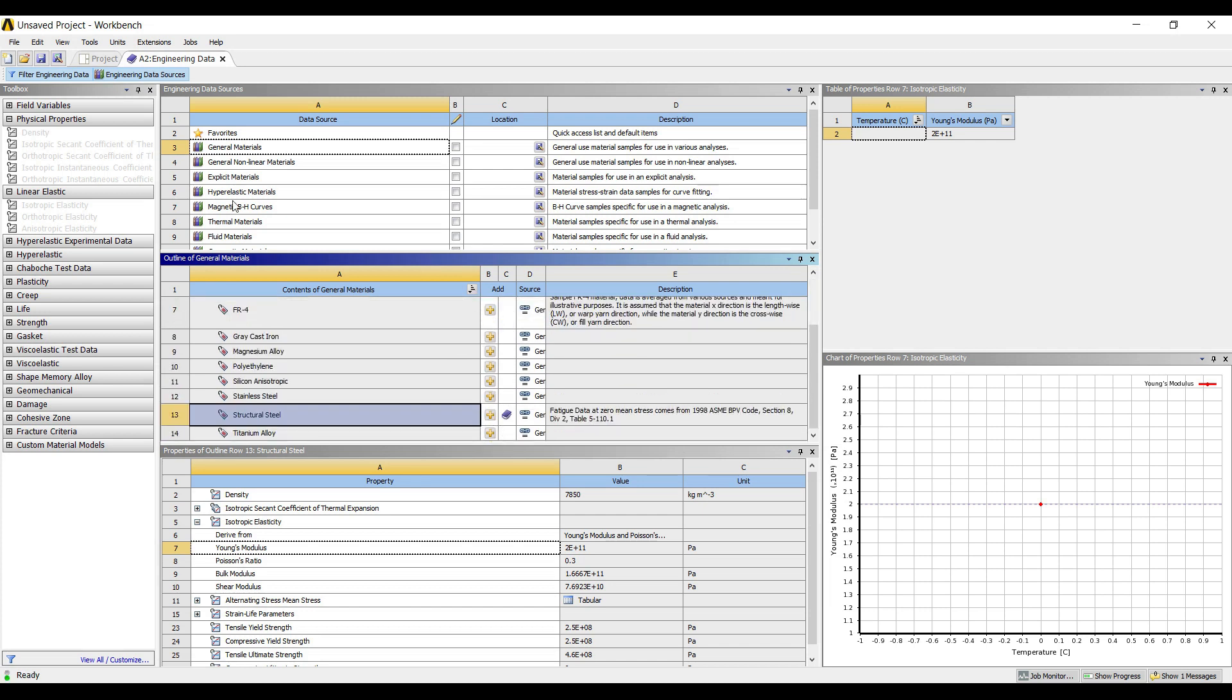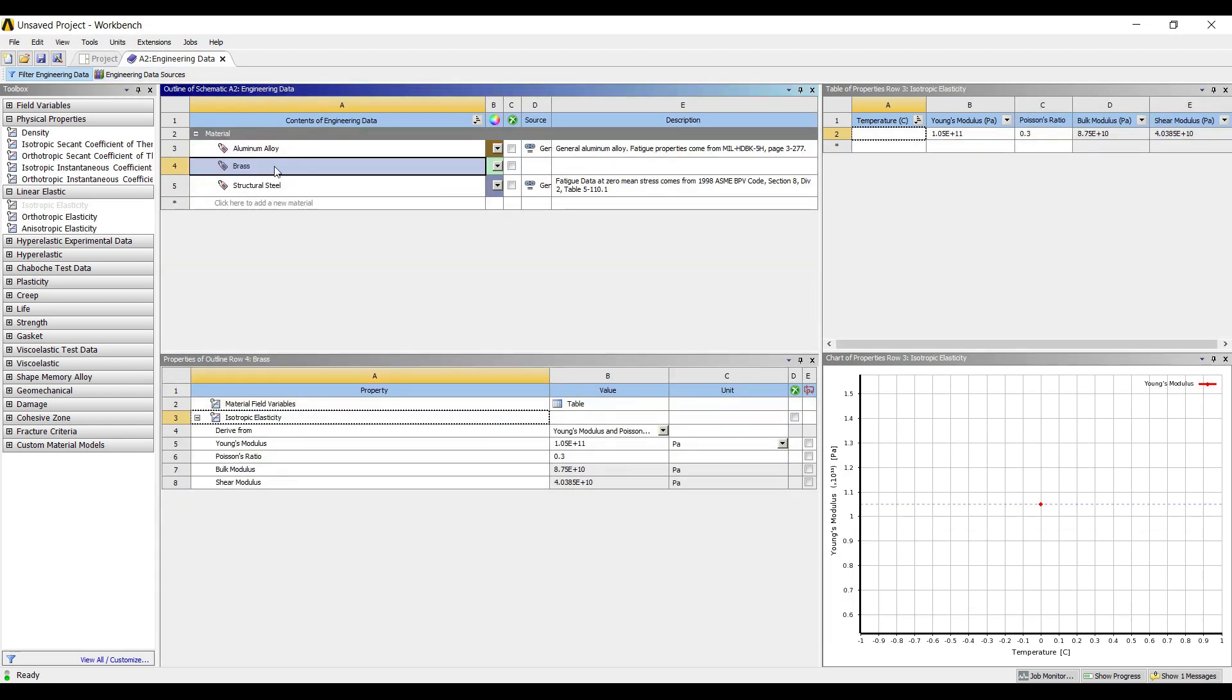Structural steel was already a default material, and if you go back and check, brass is something which is already added. So these are the 3 materials right now in my project. I will go back to project, update project.